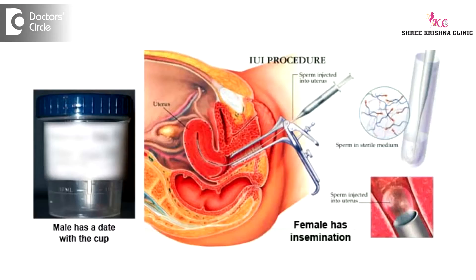Such problems are usually tackled by surrogacy — that means growing the baby in another woman's womb. Coming to cervical problems, there could be immunological problems or infectious causes. Infections can be treated with medications. For immunological problems, we usually deal with IUI — intrauterine insemination — which bypasses the cervix and deposits the sperms directly in the uterus so they do not come in contact with the cervix.